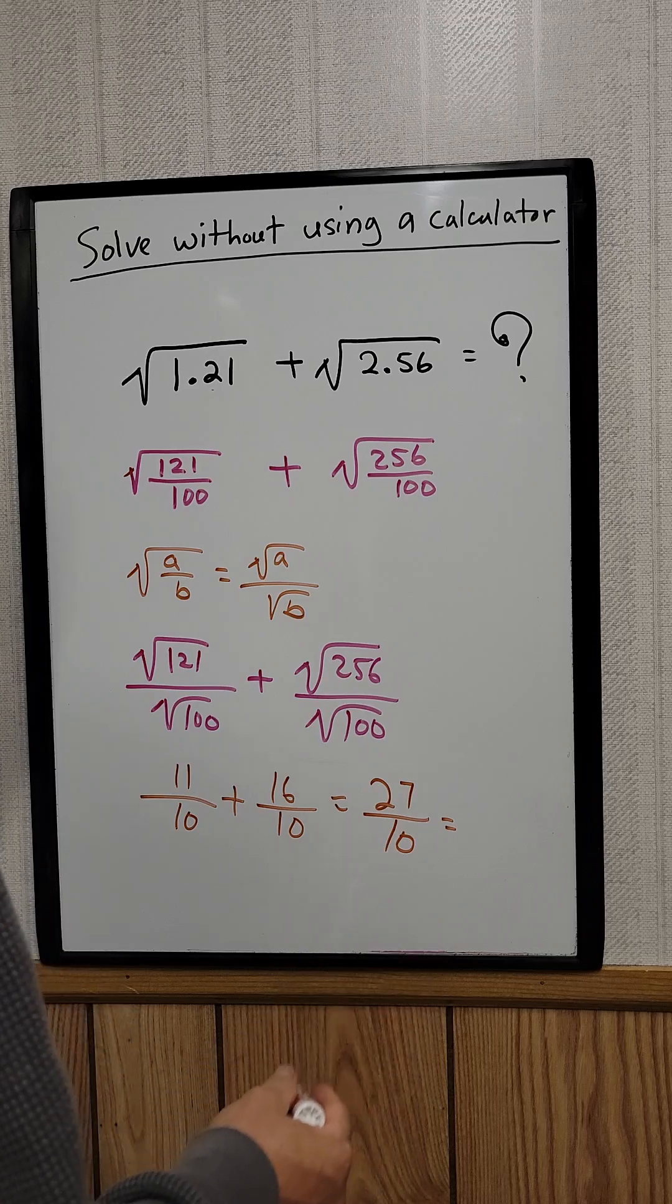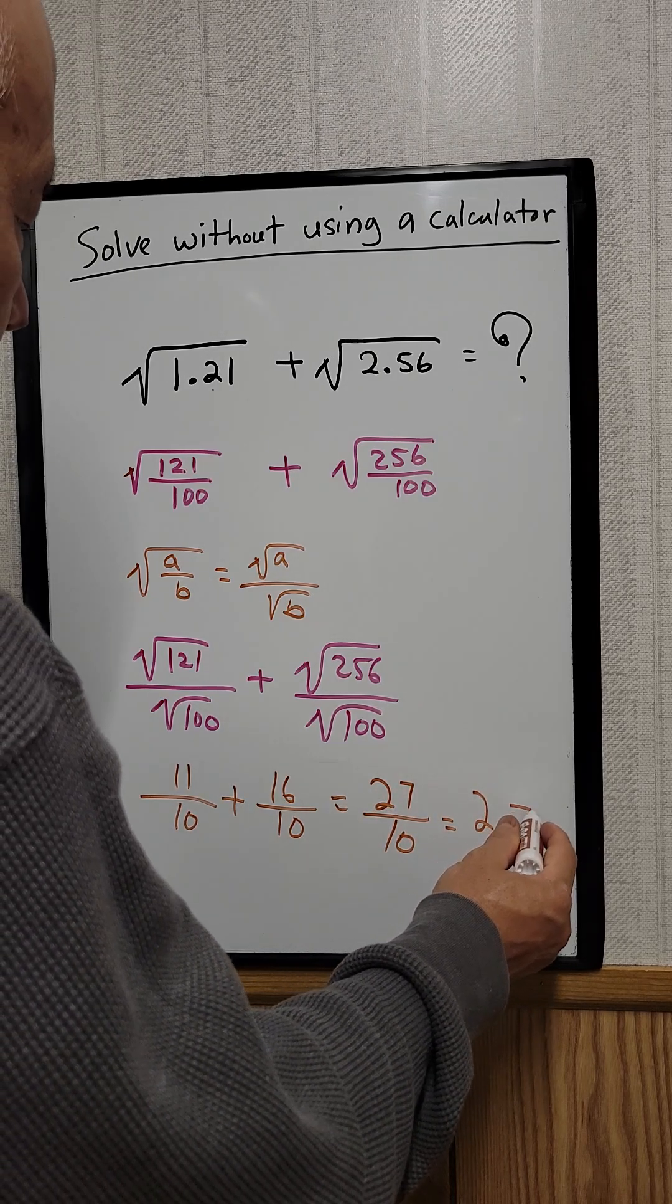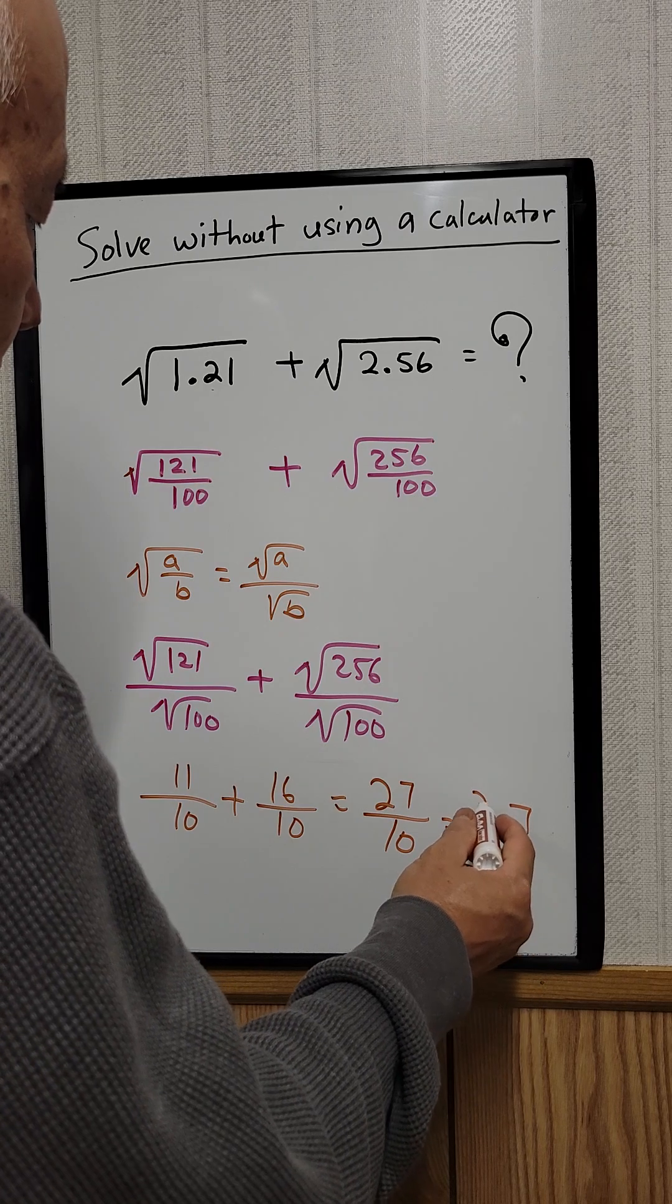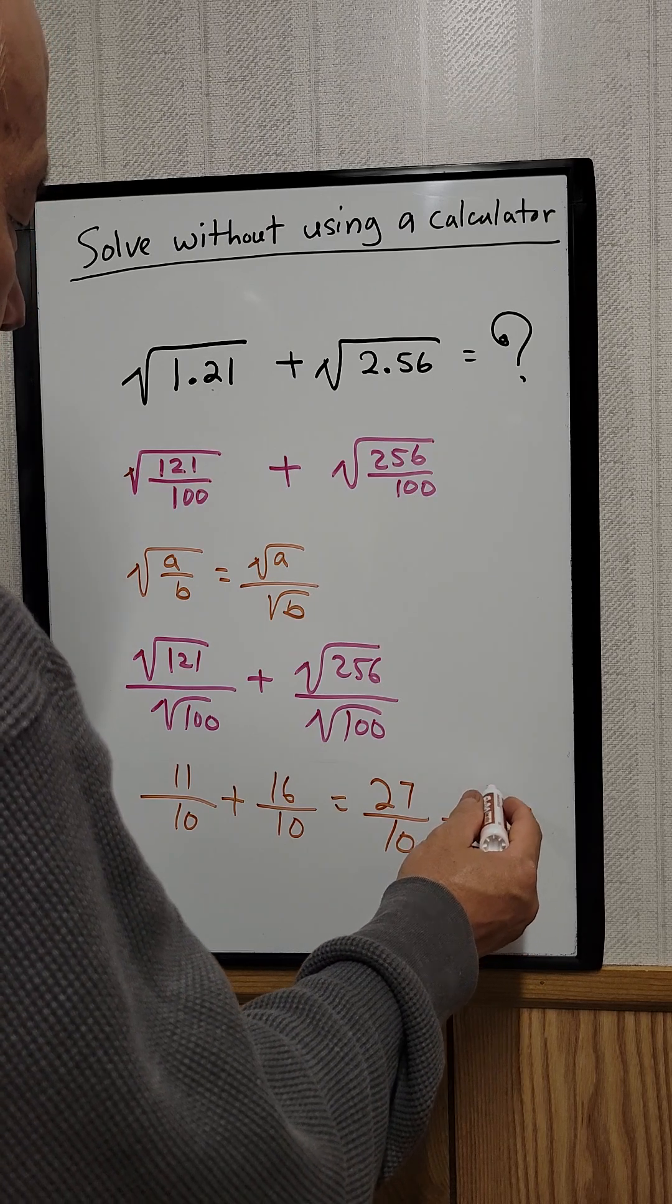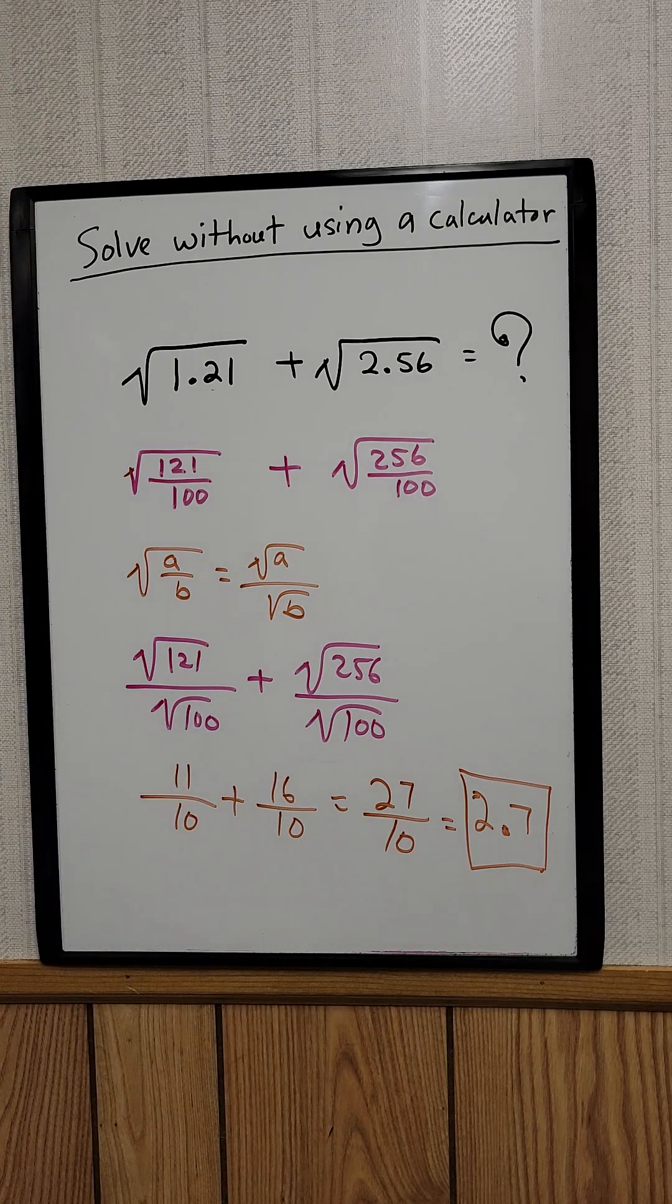What is 27 divided by 10? Now we need to just move one decimal place. It will be 2.7. So that's the answer right there. You can solve this without using a calculator.